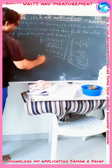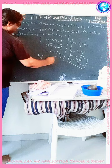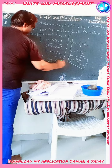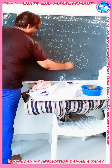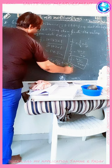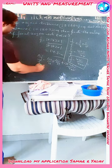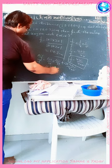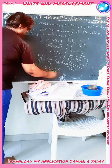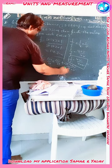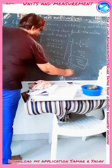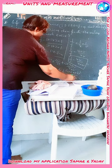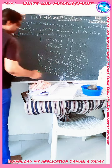The error formula is: Δf/f = Δu/u + Δv/v + Δ(u+v)/(u+v). Substituting the values, we get 0.2/50.1 + 0.2/20.1 + (0.2 + 0.2)/(50.1 + 20.1). Solving this we get the value of Δf/f.